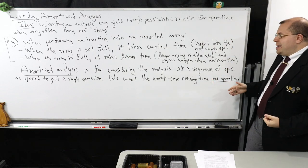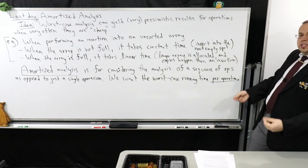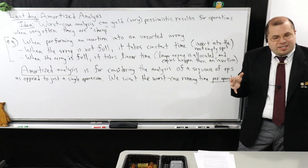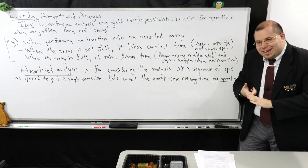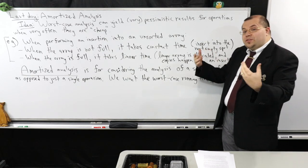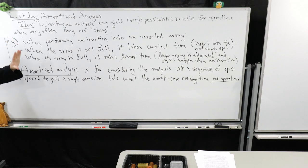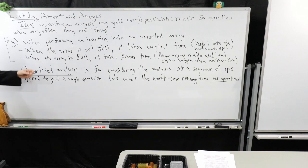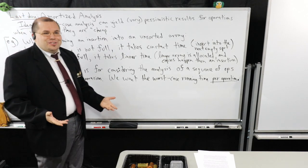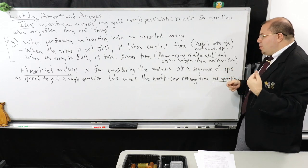In amortized analysis we look at the analysis of a sequence of operations as opposed to just one. We look for the worst case running time per operation. This is a special kind of worst case analysis — it should not be confused with average case analysis. I'm looking at the worst case per operation: given a sequence of operations, my goal is to derive the worst case running time per the number of operations performed.